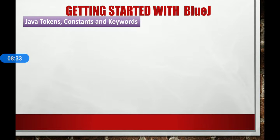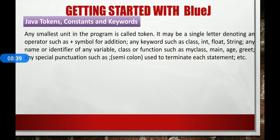Now let's discuss about Java tokens, constants, and keywords. Any smallest unit in the program is called a token. It may be a single letter, denoting an operator such as plus symbol for addition, any keywords such as class, int, float, string, any name or identifier of any variable, class, or function such as MyClass, main, age, any special symbols such as semicolon used to terminate each statement or curly brackets used to mark a block of statements, or comment symbols such as double slash, slash asterisk, asterisk slash, etc.